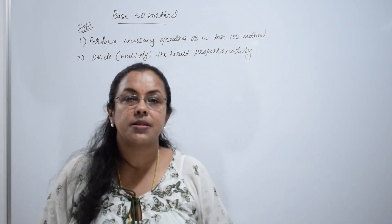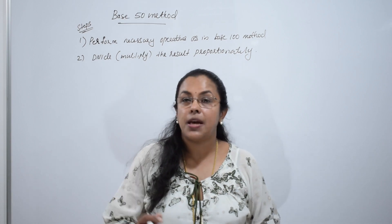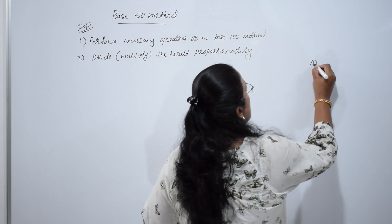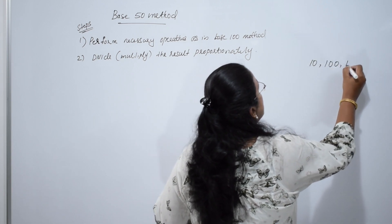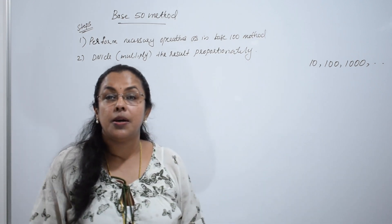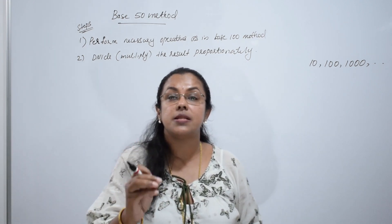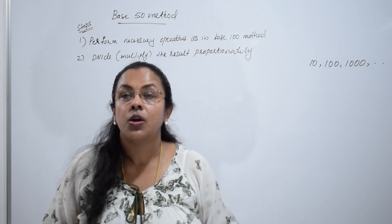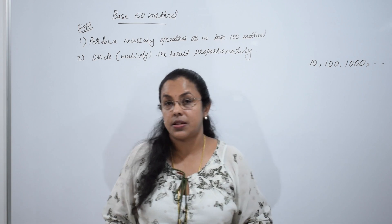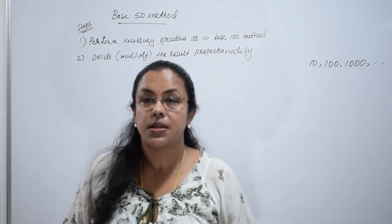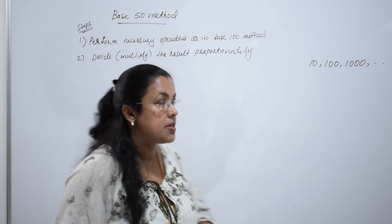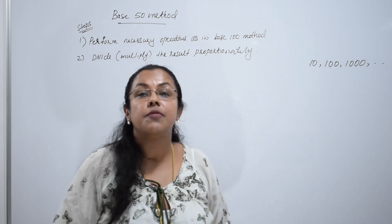According to Vedic maths, we can apply the base method directly for the powers of 10 — that is 10, 100, 1000, etc. We can apply the base method directly, which means we get the answer in only one step. For other bases, we have to take two bases: one is the theoretical base and the other is the working base.